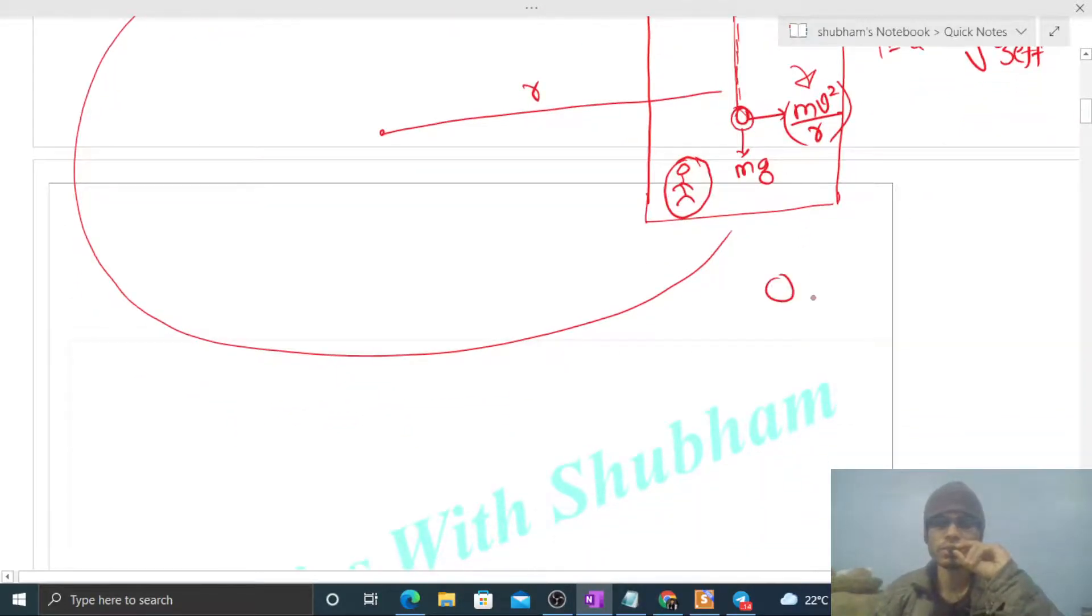So what is the net force acting on this pendulum? In this direction it will be m·v²/r and vertically downward is mg. So net force will be √(m²g² + m²v⁴/r²), which is m√(g² + v⁴/r²).